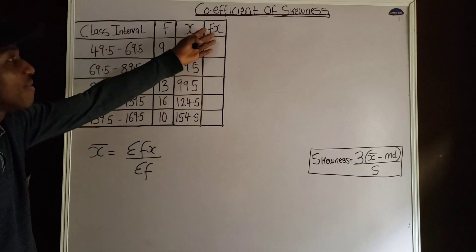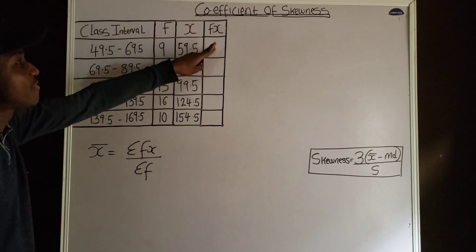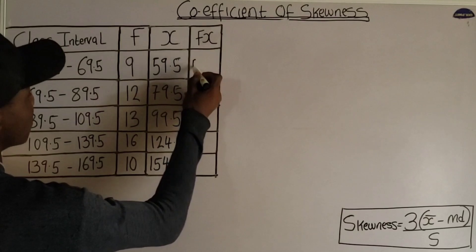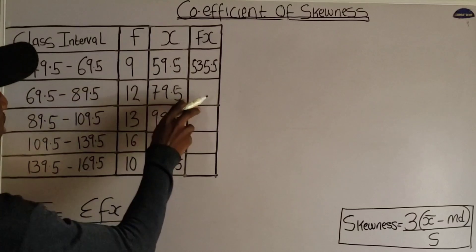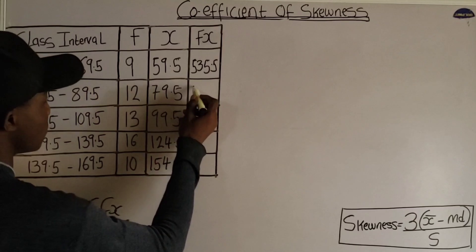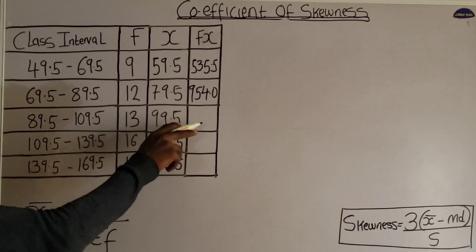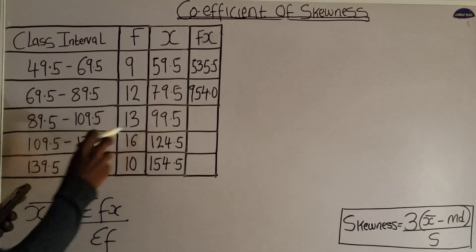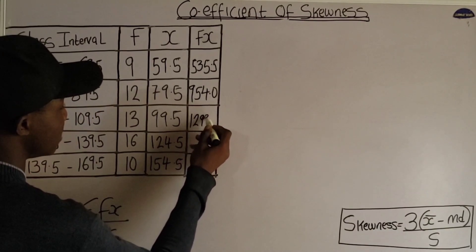Now let us calculate fx — the product of frequency f and midpoint x. For the first row: 9 multiplied by 59.5 equals 535.5. For the second row: 12 multiplied by 79.5 equals 954.0. For the third row: 13 multiplied by 99.5 equals 1293.5.